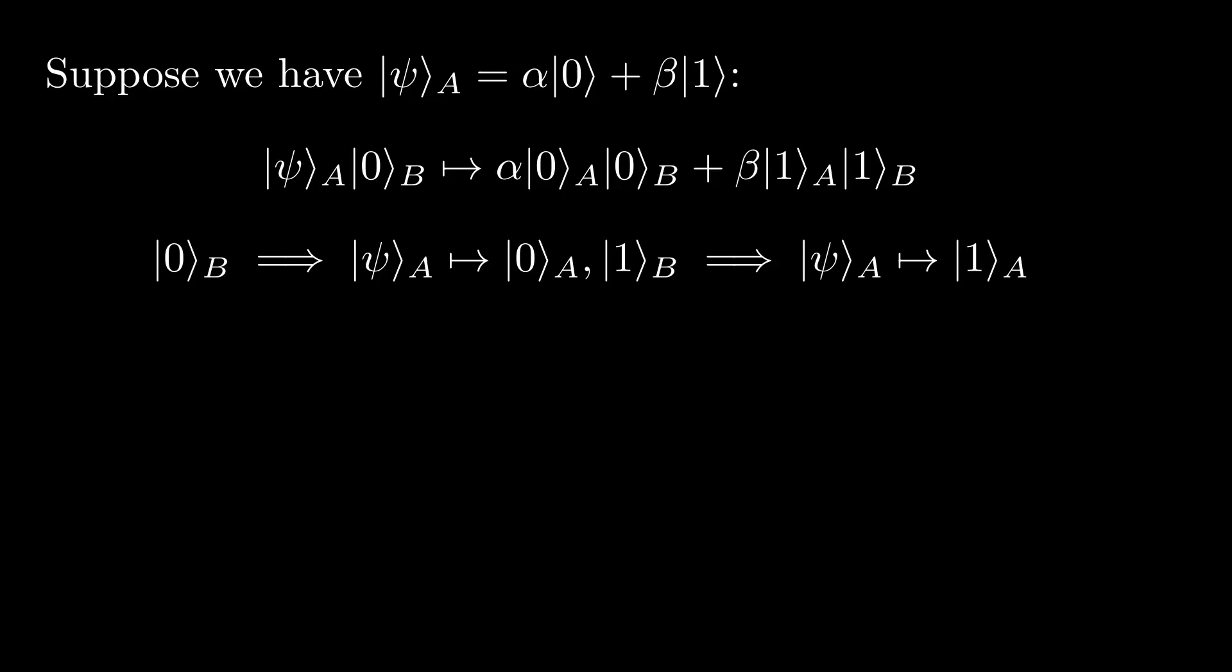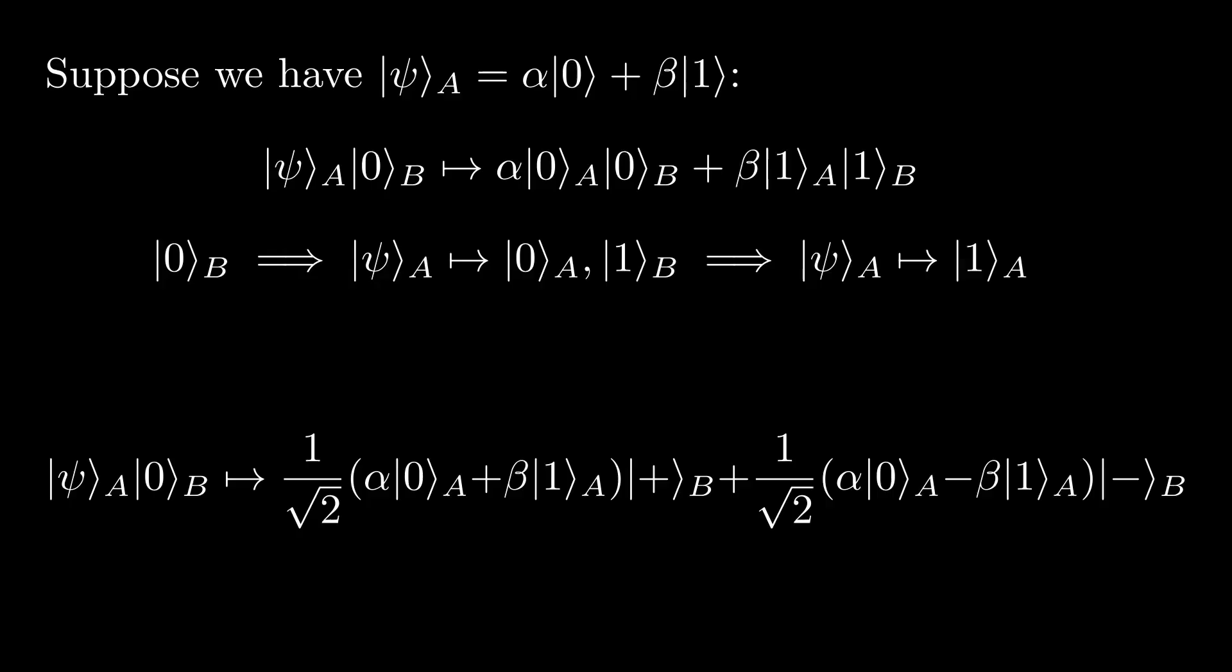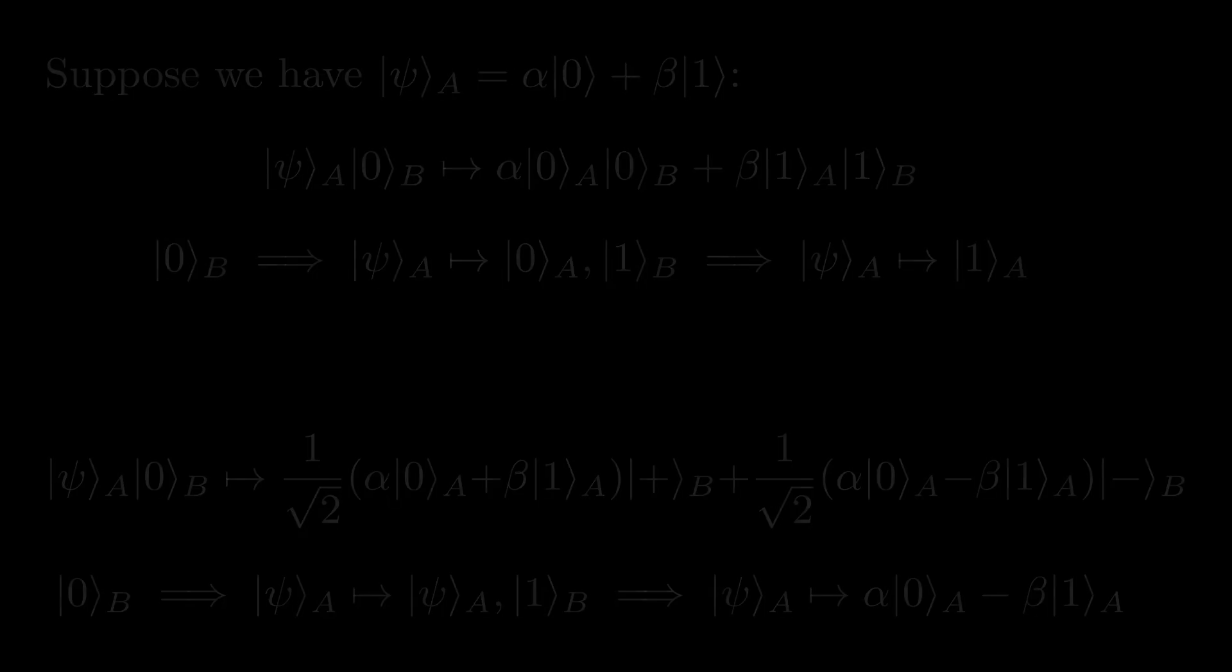However, a key difference to note here is that performing orthogonal measurements on B does not necessarily produce orthogonal measurements on A. For instance, suppose we measure B in the plus-minus basis. Rewriting the unitary transformation from before in the plus-minus basis, we get the following. Here, we can see that measuring plus means that psi_A simply stays the same, while measuring minus means that psi_A becomes alpha*0 minus beta*1, which are not orthogonal to each other except for the case where the absolute value of alpha is equal to the absolute value of beta. Since the two states we project A onto are not orthogonal, we dub this type of measurement a generalized measurement.